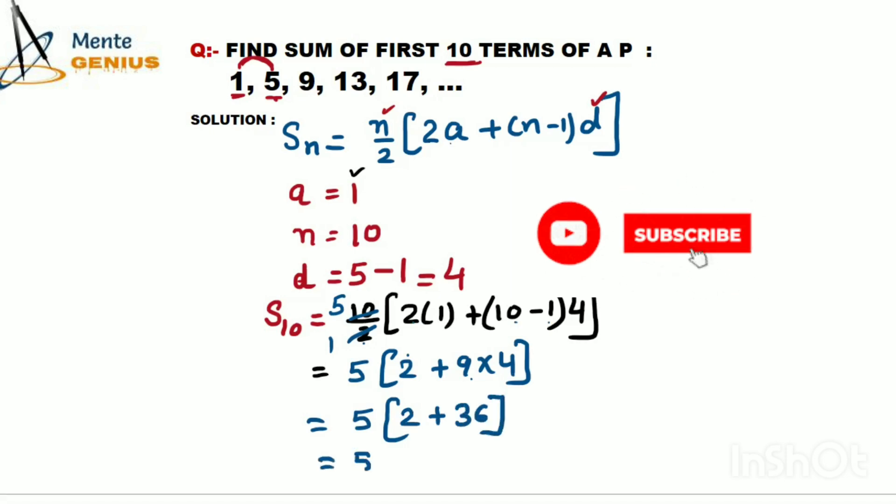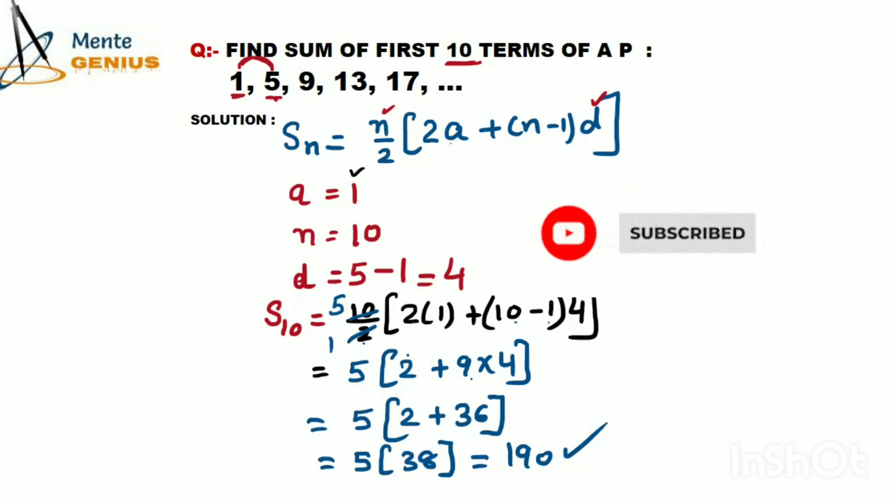So 5×38 which will give me 190. If we were to write all 10 terms first and then add them, it would take a lot of time. In Class 10 this process is given - you can follow this process to find the sum of all terms.